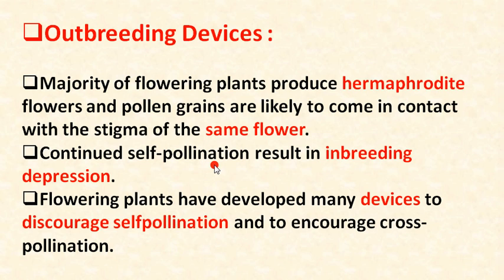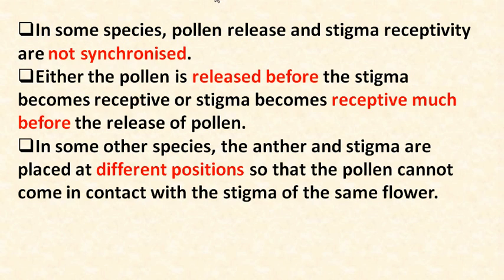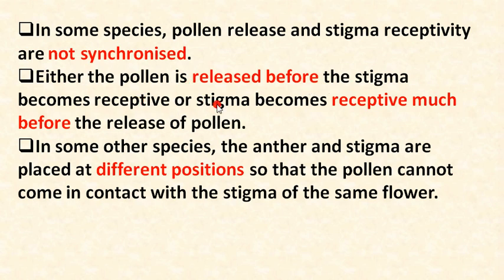In some species, pollen release and stigma receptivity are not synchronized — meaning both are not ready at the same time. Either the pollen is released before the stigma becomes receptive, or the stigma becomes receptive much before the release of pollen. This naturally prevents self-pollination.